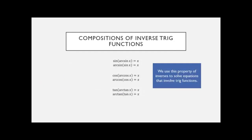For compositions of inverse trig functions: because they're inverses, they undo each other. Sine of arc sine, or arc sine of sine — those just cancel. Same with cosines and tangent. This is used when solving equations with trig functions: take the arc sine of both sides to undo the sine, remembering to do it on both sides of the equation.